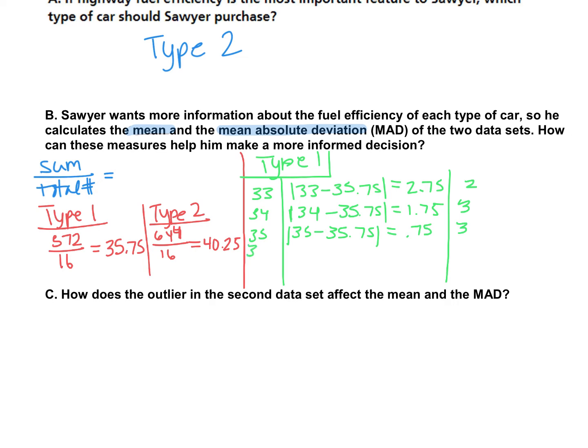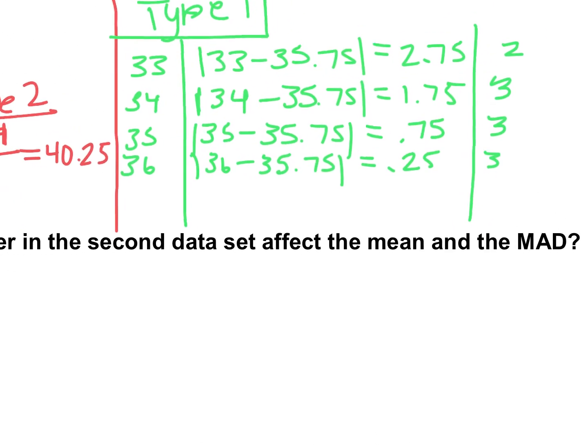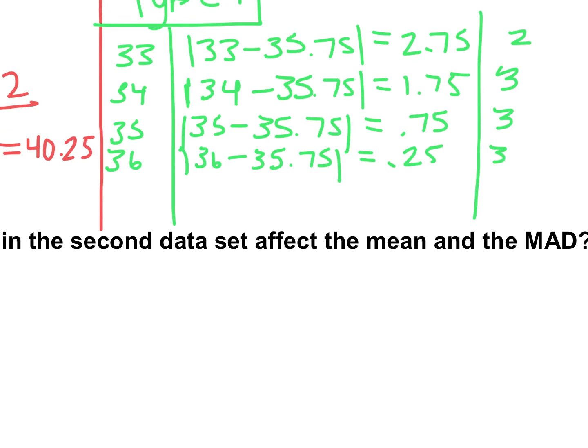All right, so 36 is our next one. So we take 36 minus 35.75, and we get 0.25. And how many of those were there? We had three 36s. All right, I'm going to try to see if I can write smaller. We have more to fit in. Our next one is 37.